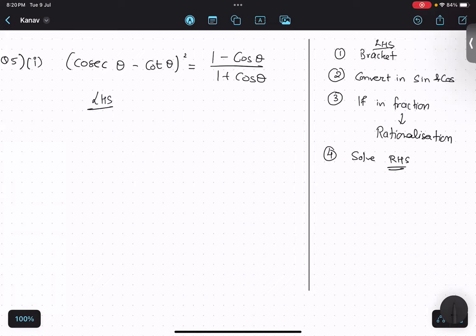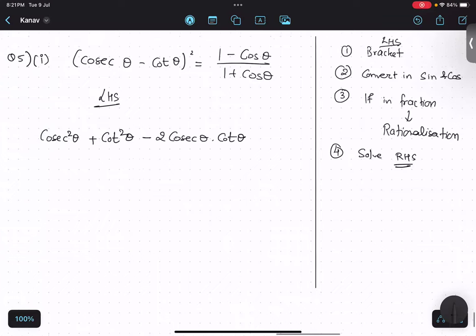As I told you, there is a power 2. So what we are going to do, we are going to use identity a minus b whole square. a² plus b² minus 2ab. Cosec θ into cot θ. I am not going to write the right hand side part. I am just going to solve left hand side.